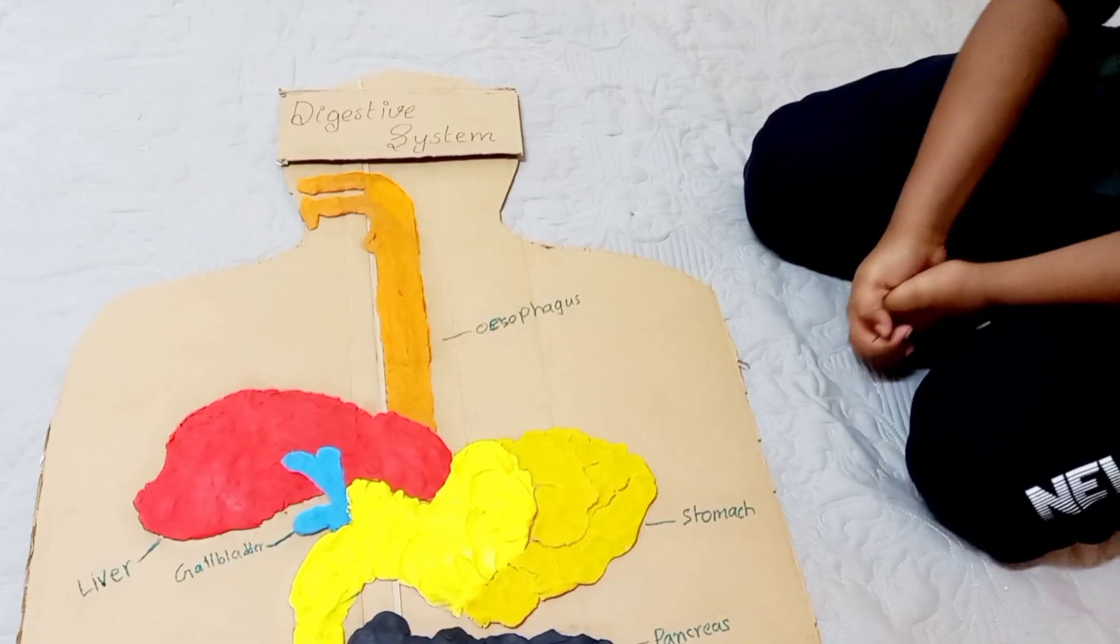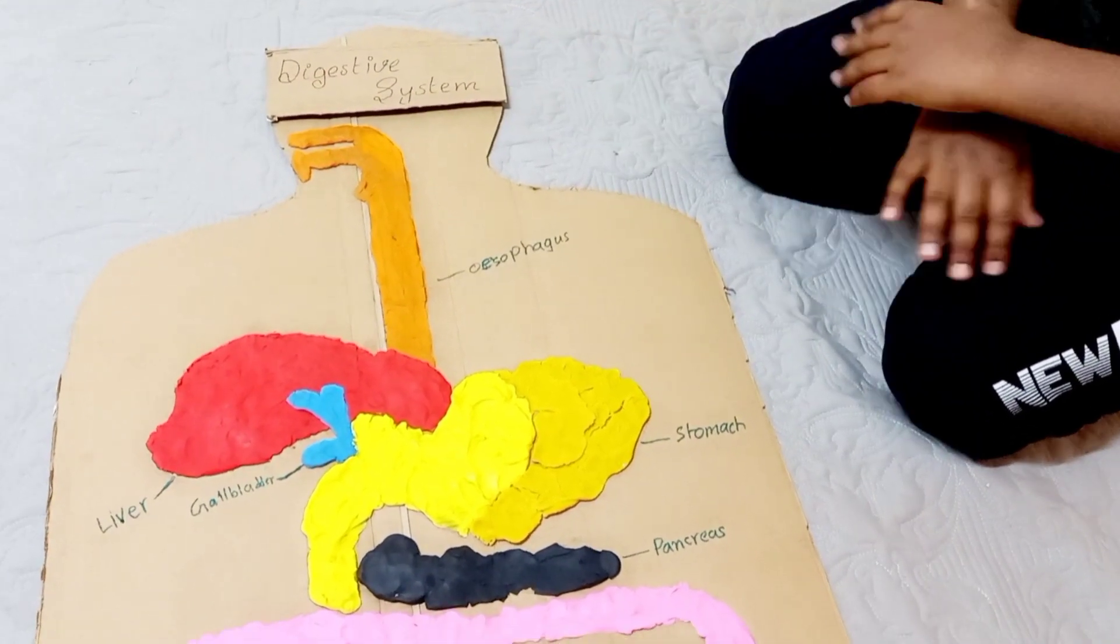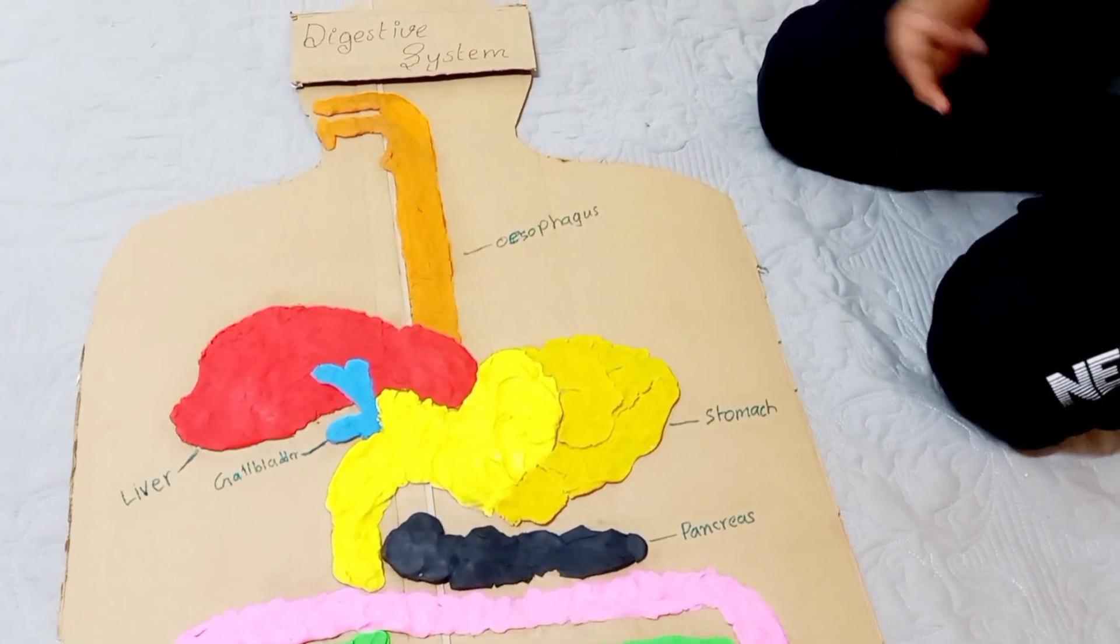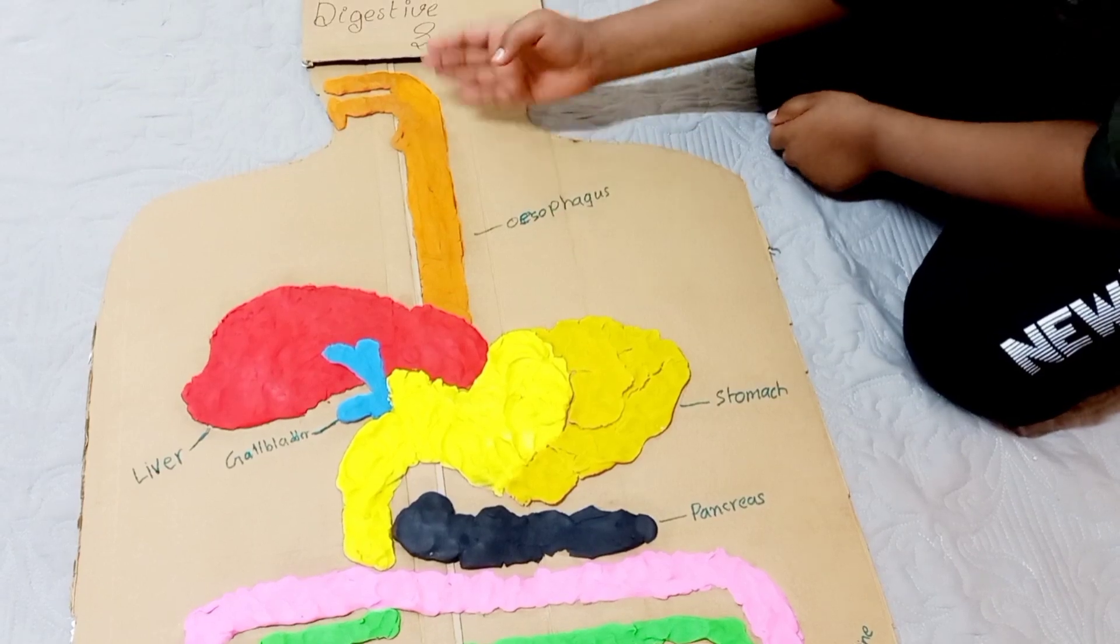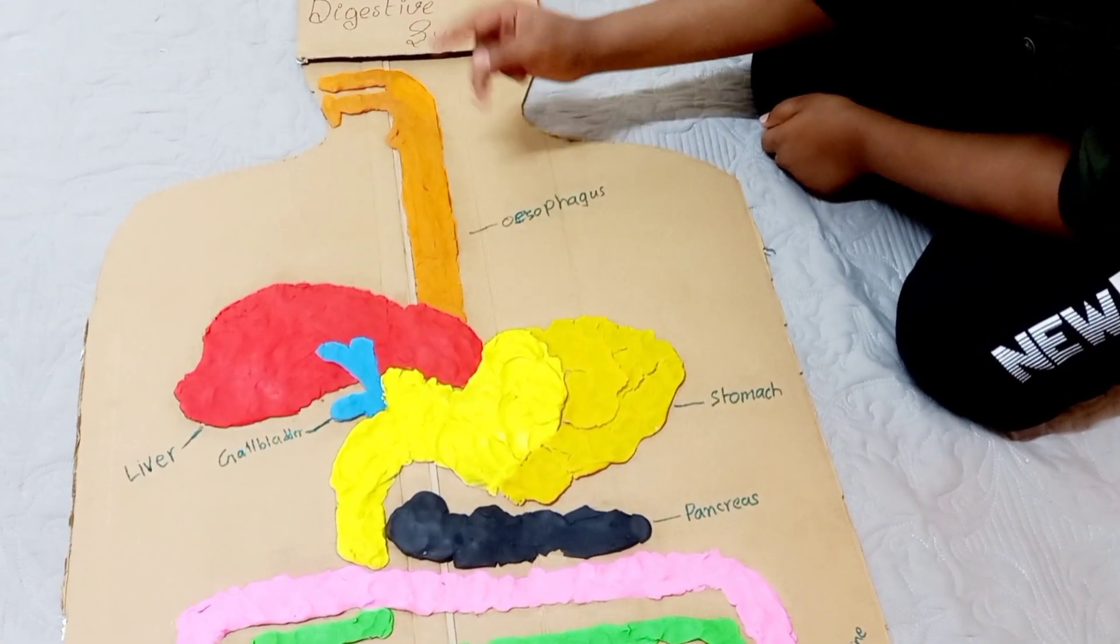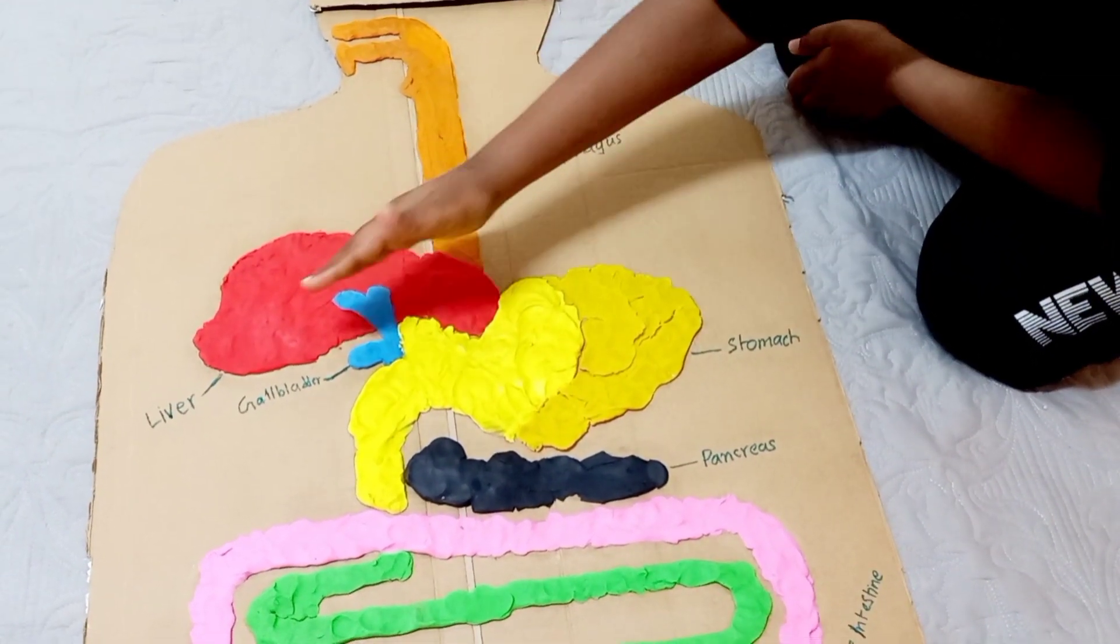The function of the digestive system is digestion and absorption. Digestion is the breakdown of food into small molecules which are then absorbed into the body. The digestive system is divided into two major parts. The digestive tract is a continuous tube with two openings: the mouth and the anus.